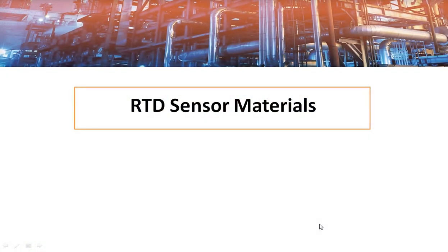In this video I am going to discuss about RTD sensor materials. The materials used for RTD sensors are metals. Metals have a positive temperature coefficient of resistance, meaning resistance increases with temperature, and the change in resistance is measured and converted to temperature.